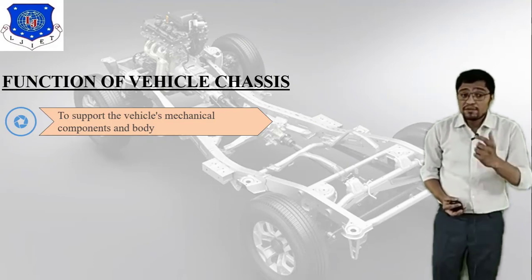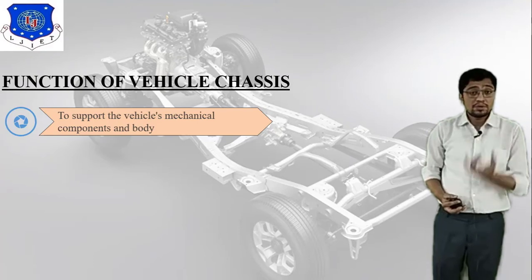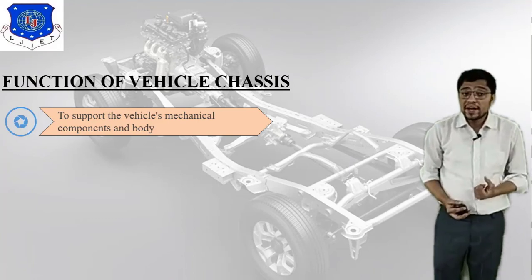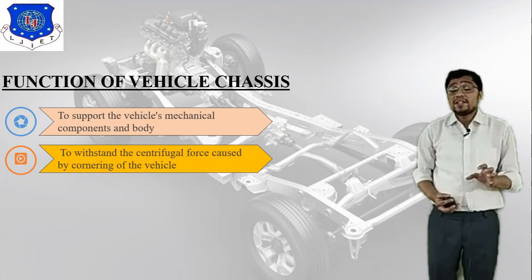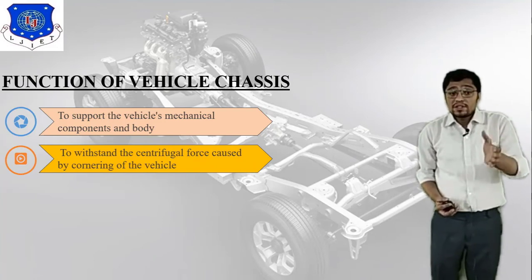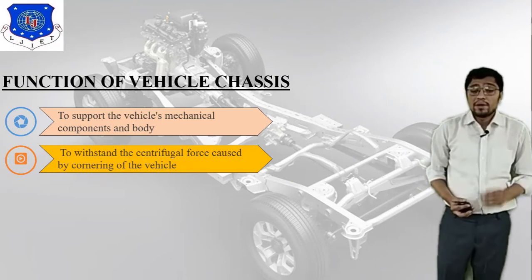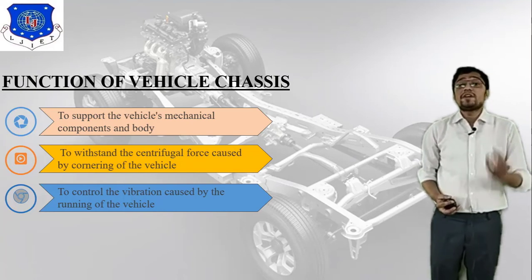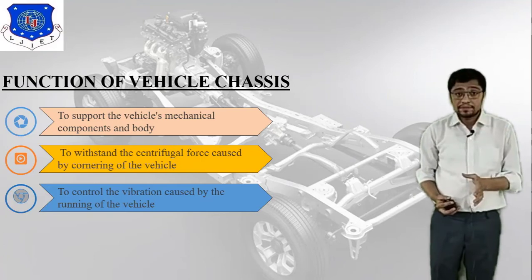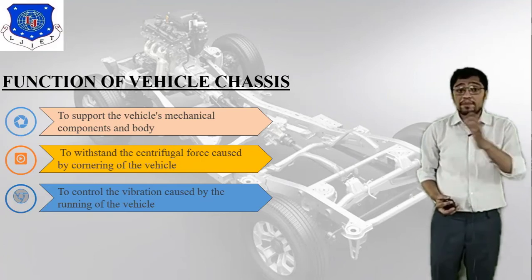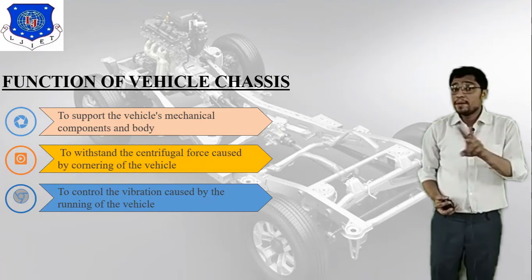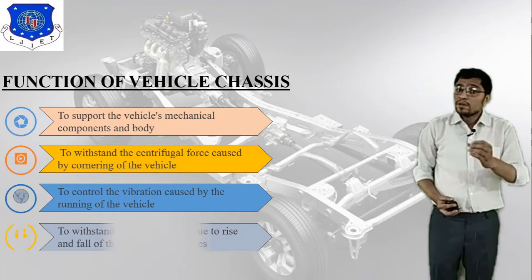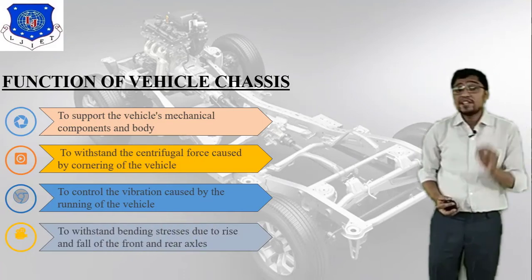Functions of vehicle chassis: there are mainly four functions. First, to support the vehicle's mechanical components and body assembly. Second, to withstand the centrifugal force caused by cornering of the vehicle — this is very important. Third, to control the vibration caused by the running of the vehicle, which is important to reduce accidents. There are two types of safety — active safety and passive safety — which we will discuss in chapter three.